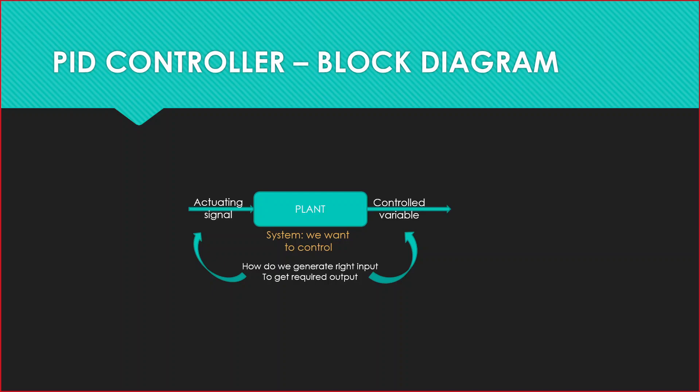Input signal can be called command variable, set point, or actuating signal. And the plant, what is our plant? This is the system that we have to control. And after that we have a required output.